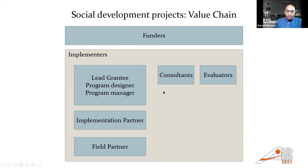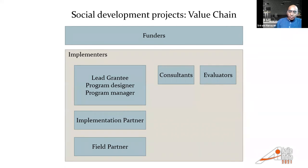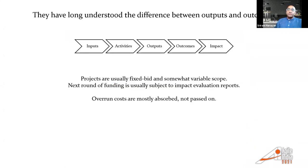The organization I was helping — depending on context they would be a lead grantee, program designer, program manager, or even an evaluator, because in this space you do the social development project and then evaluate its impact. In the world of social development, they've understood the outputs-outcomes distinction long back — it's very much part of the sector. When you begin with inputs, you perform certain activities, those activities lead to outputs, which lead to outcomes, which ultimately create some social impact. There are monitoring and evaluation agencies concerned only with impact evaluation.